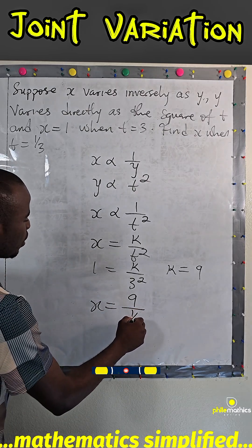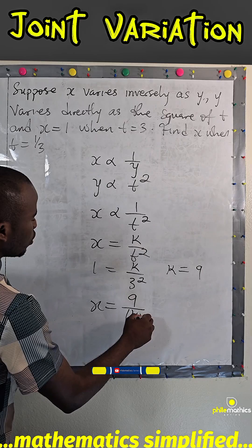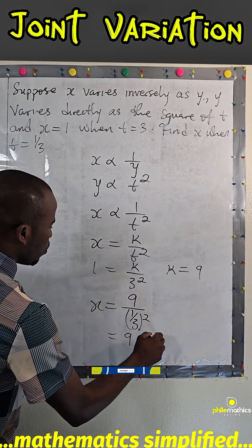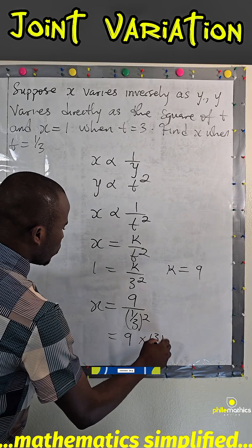So this will be 9 over 1 over 3 square, which is 9 times 3 square over 1, which is 9 times 9.